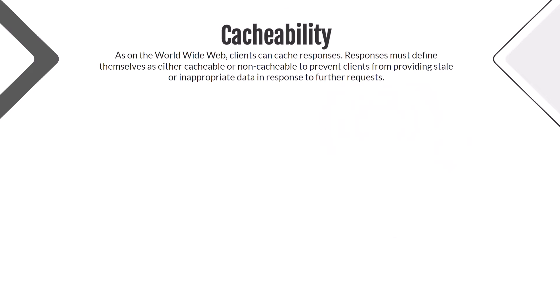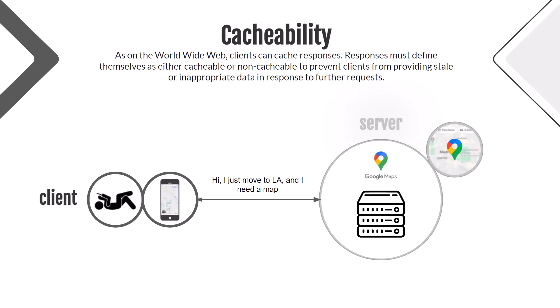Let's move to the next principle: the cacheability principle. On the World Wide Web, clients can cache responses. Responses must define themselves as either cacheable or non-cacheable to prevent clients from providing stale or inappropriate data in response to further requests. Let's move to the client-server schema to explain this. Everything is usual — clients, server, map resource — and the client sends a request to the server.